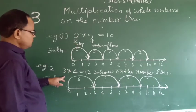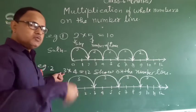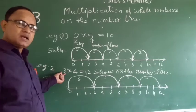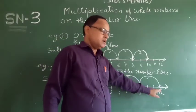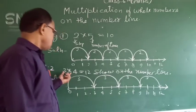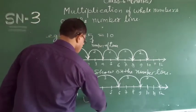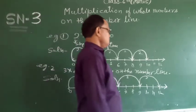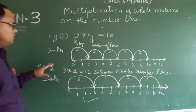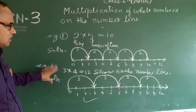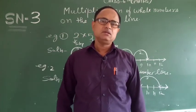Here 3 is the step and 4 is the number of times by which 3 moves toward the right side. We go on to 12. Thus we show the multiplication of whole numbers on the number line by this method. 3 into 4 is equal to 12. These types of questions you can solve on this basis. Thank you all.